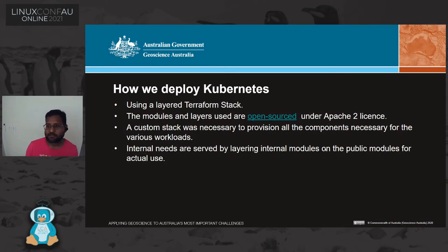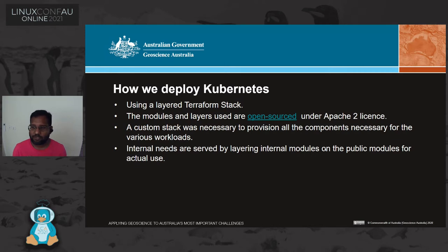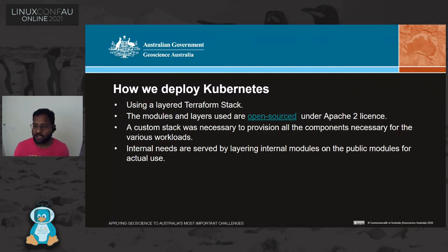We deploy Kubernetes using a multi-layered Terraform stack where all the parts our implementation needs get brought up. The choice of Terraform over a vendor-specific cloud tool is because we aim to be agnostic to the cloud provider — all you need is Kubernetes, a stateful database, and a blob store to run the stack. The modules have been open-sourced under an Apache 2 license. We have a few additional modules we overlay for our specific patterns, and we may open those up as the pattern gets better documented.